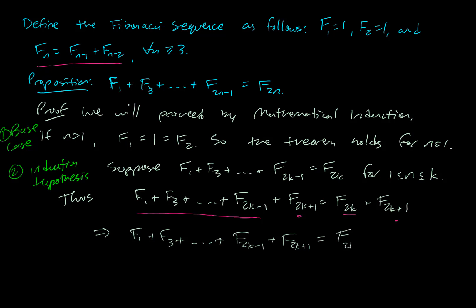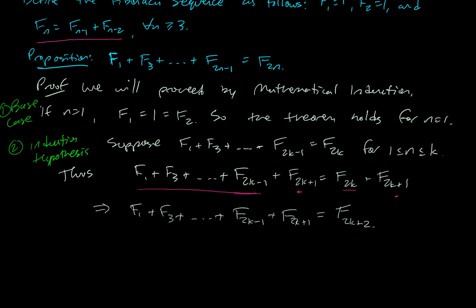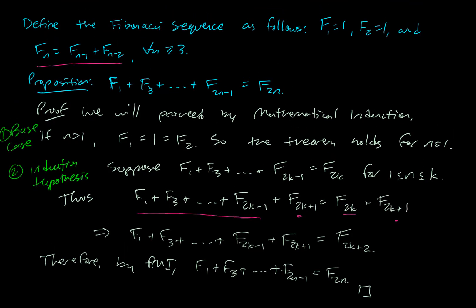Which is F(2k+2), which is exactly what we were hoping to show. That's what we needed. So we can just finish up by saying, therefore, by the principle of mathematical induction, the summation that we needed works.